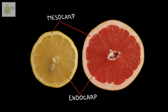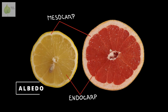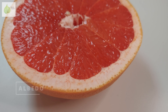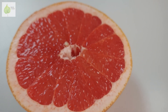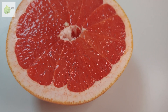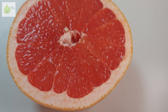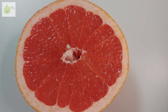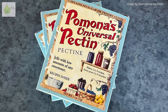The mesocarp is the white tissue between the pulp and the rind and it might also be referred to as albedo. Albedo is packed with fiber, namely pectin, which has jellifying properties, and commercially produced pectin that you might use when making jams or marmalades comes straight from this part of the citrus fruit.